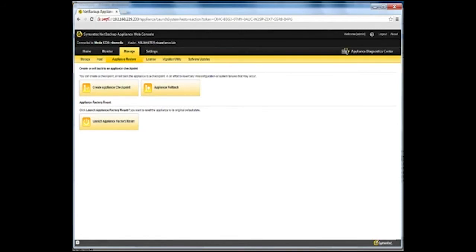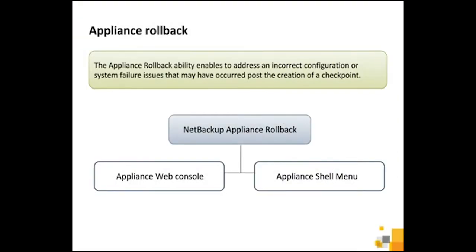Let's now talk about the procedure to roll back a NetBackup Appliance 5330 from an available checkpoint. The appliance rollback ability enables you to address any misconfiguration or system failure issues that may have occurred post the creation of a checkpoint. You can roll back your appliance to an existing restore checkpoint using the NetBackup Appliance web console or the NetBackup Appliance shell menu or CLISH.